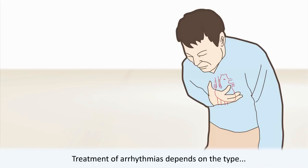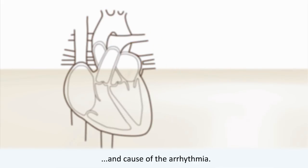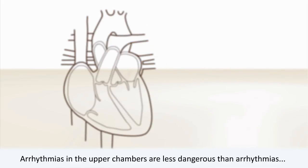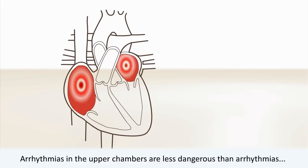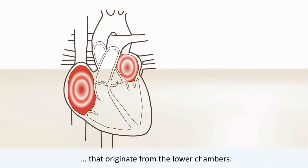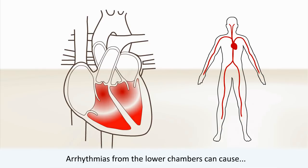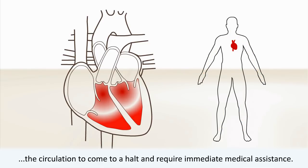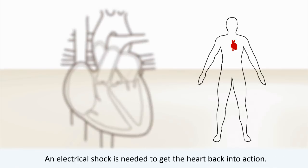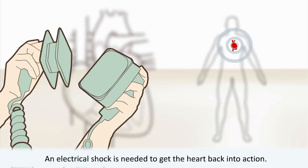Treatment of arrhythmias depends on the type and cause of the arrhythmia. Arrhythmias in the upper chambers are less dangerous than arrhythmias that originate from the lower chambers. Arrhythmias from the lower chambers can cause the circulation to come to a halt and require immediate medical assistance. An electrical shock is needed to get the heart back into action.